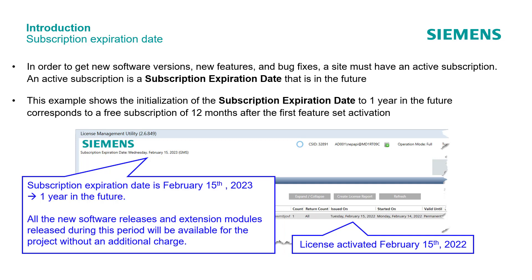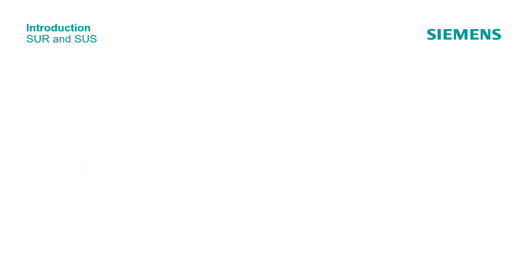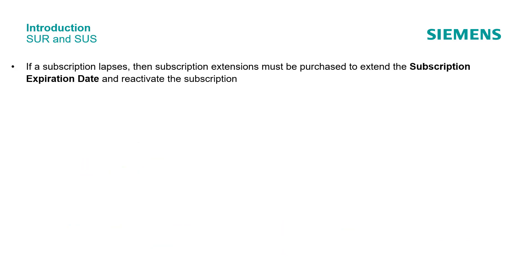All new software releases and extension modules released during this period will be available for the project without an additional charge. The SUOR — subscription renewal — and SUS — subscription start. If a subscription lapses, then subscription extensions must be purchased to extend the subscription expiration date and reactivate the subscription.